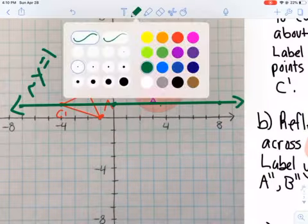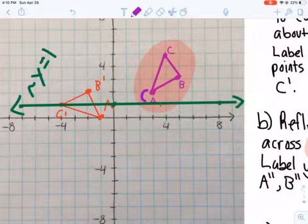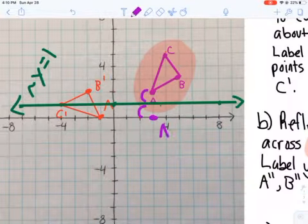Now, the reflection part, believe it or not, this is fairly easy. Not a lot of math involved here. Basically, I look at A, I figure, okay, A is one point above my reflection line. So I'm going to go down one, and here goes A two.